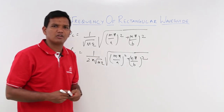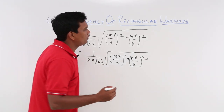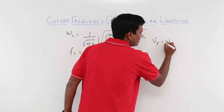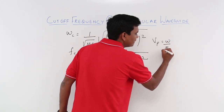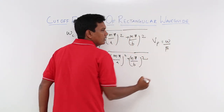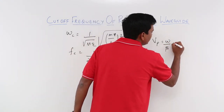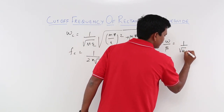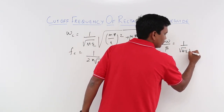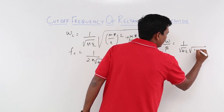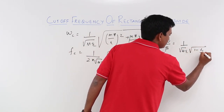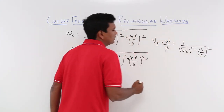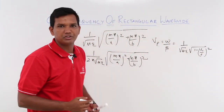What will be the phase velocity? The phase velocity v_p is nothing but omega over beta. If you solve this, what you will get is 1 over sqrt(mu*epsilon) times 1 over sqrt(1 - (f_c/f)^2). This is the phase velocity.